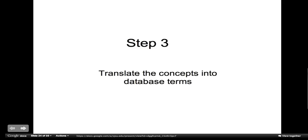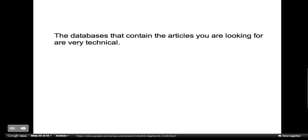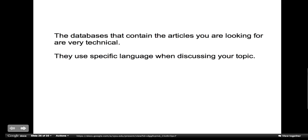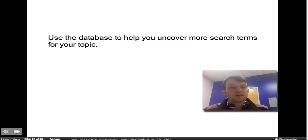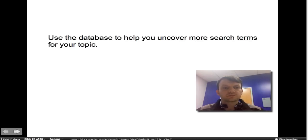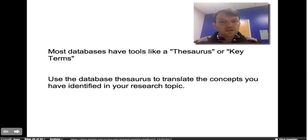Your next step is to translate these concepts into database terms. The databases that contain the articles you are looking for are very technical. They use specific language when discussing your topic. For example, the databases generally don't use the word teenagers — they use adolescents. Instead of grades, a lot of scholarly databases use the term academic performance. In social science research, when we're talking about troubled children, the databases tend to describe them as at-risk youth. Use the database to help you uncover more search terms for your topic. Most databases have tools like a thesaurus or key terms. Use the database thesaurus to translate the concepts you have identified in your research topic.